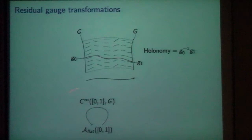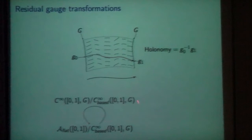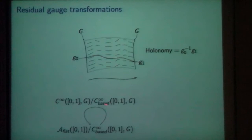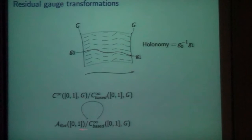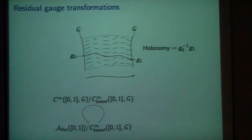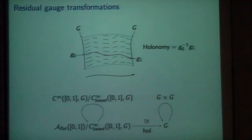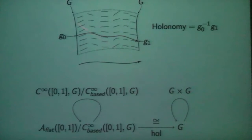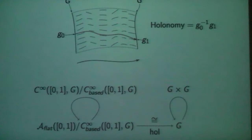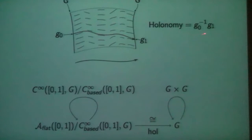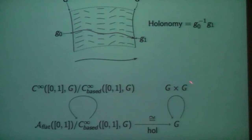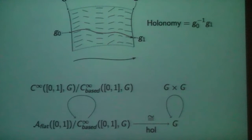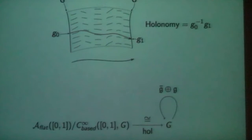I have the full gauge transformations acting on the space of flat connections over the edge, and the space of base gauge transformations is a normal subgroup. So the quotient acts on the quotient space. I can use the holonomy map to identify this quotient space with the structure group G. All that remains after taking this quotient of the gauge transformations by the base gauge transformations is a gauge transformation on either of the two rank fibers — so one copy of G acting on the final fiber and one copy of G acting on the initial fiber. Those two copies act on the left and the right.